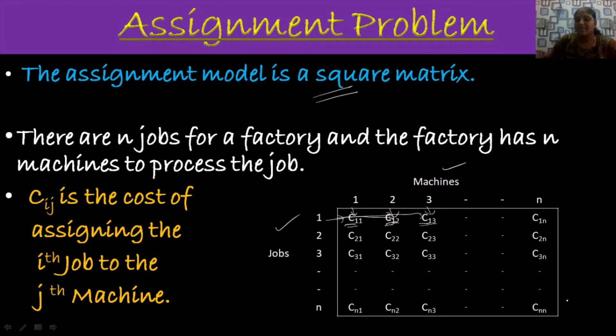Here, it is an N by N matrix. Since the order of matrix is N, it is an N by N matrix. That is basically, it is a square matrix. So here, generally, Cij is the cost of assigning the i-th job to the j-th machine.